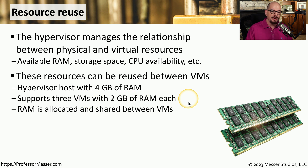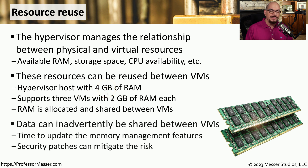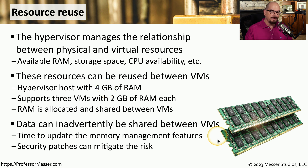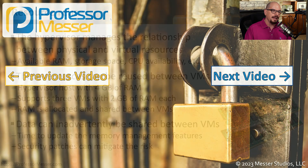Each of the three VMs is allocated two gigabytes of RAM each — totaling six gigabytes allocated, while only four physical gigabytes are available. We're relying on the hypervisor to only allocate memory where it's needed, effectively using six gigabytes of space on a machine equipped with only four. This means at certain times there may be memory areas shared between different virtual machines, and it's this sharing of information where problems can arise. If the hypervisor has a bug that doesn't properly manage resource sharing, one VM could write to a memory area that could then be read by a different VM. Once that code is updated, that sharing would no longer take place, and we can avoid any type of resource reuse vulnerability.